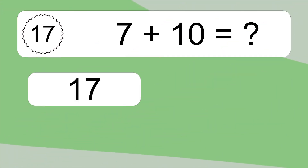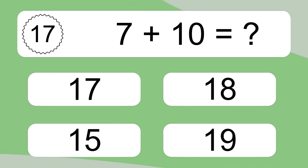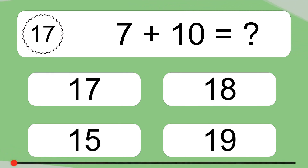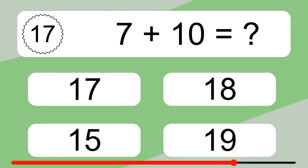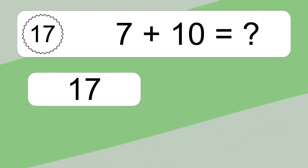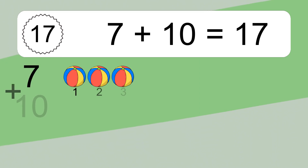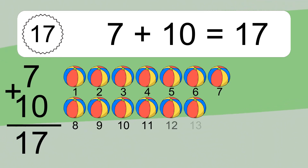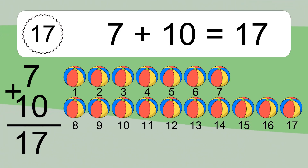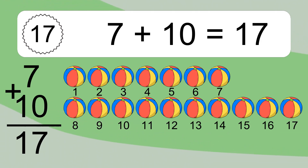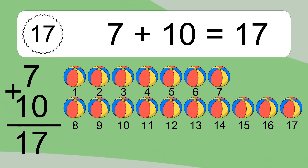7 plus 10 equals what? 7 plus 10 equals 17. Let's count it: 1, 2, 3, 4, 5, 6, 7, 8, 9, 10, 11, 12, 13, 14, 15, 16, 17.